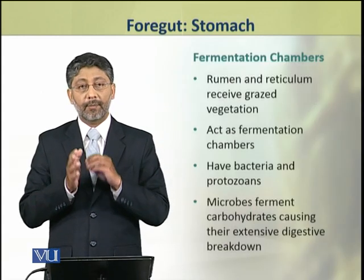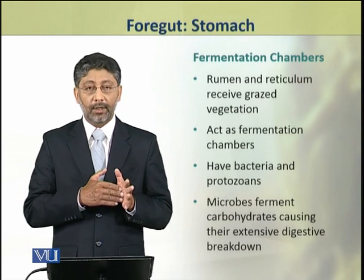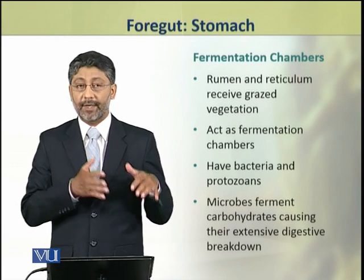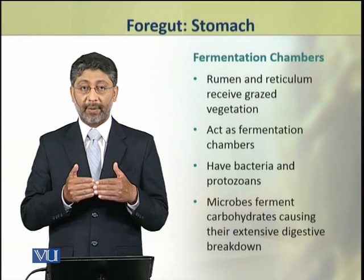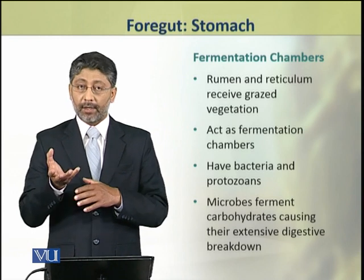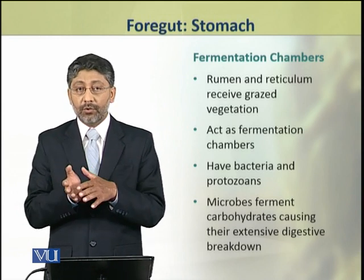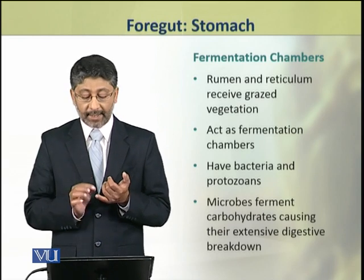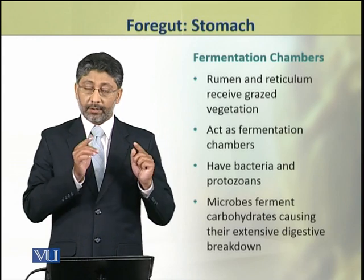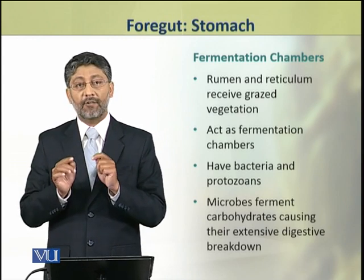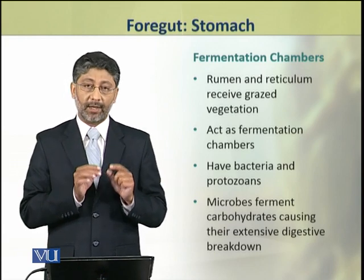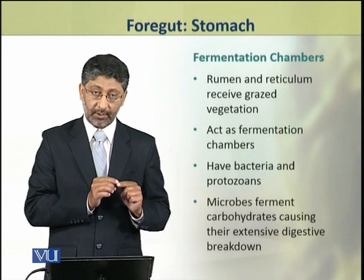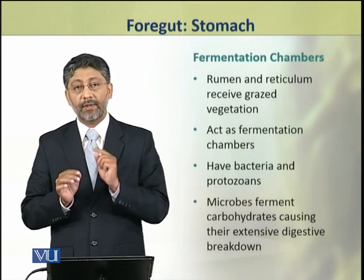First we shall discuss the fermentation chambers — rumen and reticulum — which receive the food and vegetation after grazing. Because these herbivores are ruminants, their food is vegetation. When grazing, these animals send their food into the rumen. These chambers act as fermentation chambers and have a large population of bacteria and protozoans. These microbes ferment the carbohydrate components of the ingested food and cause their extensive digestive breakdown.